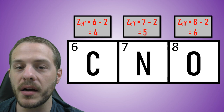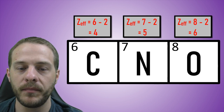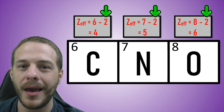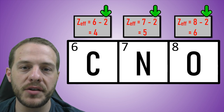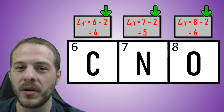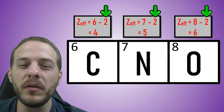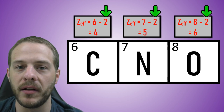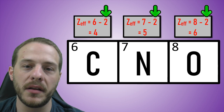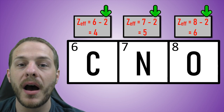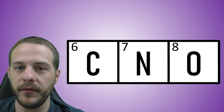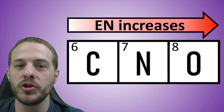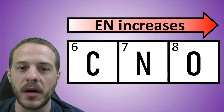In the case of carbon, nitrogen, and oxygen, the effective nuclear charge increases going from left to right. Notice that in all three cases, there are only two shielding electrons, which are the electrons located in the previous principal energy level — the n = 1 principal energy level. Even though oxygen has more valence electrons than nitrogen, which has more valence electrons than carbon, those additional valence electrons in oxygen and nitrogen don't provide any shielding — only the core electrons provide shielding to the valence electrons. As a result, oxygen is the most electronegative element out of these three and carbon is the least, because in the case of oxygen, the valence electrons are being held more tightly by the nucleus as a result of its higher effective nuclear charge. So the general trend is that electronegativity increases moving from left to right across a period, because the effective nuclear charge increases as a result of packing on more positively charged protons with no additional shielding.